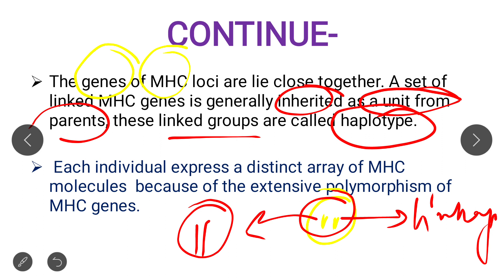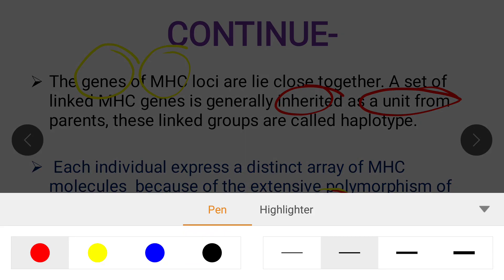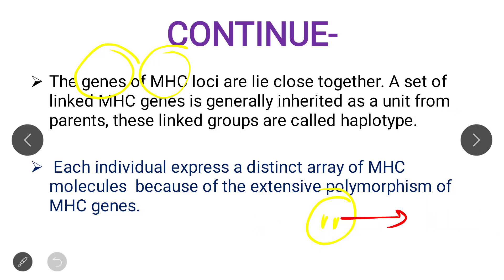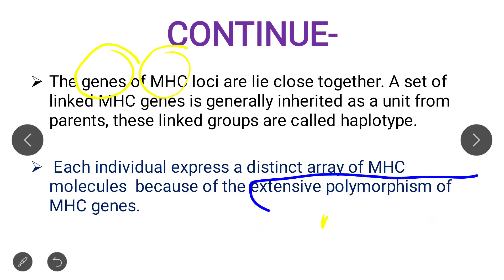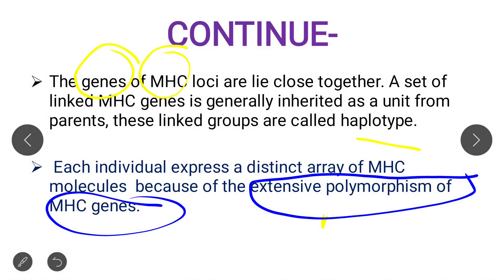Each individual of the same species expresses a distinct array of MHC molecules. Why? Because of the process of genetic polymorphism. Due to genetic polymorphism, each individual expresses a unique, distinct array of MHC molecules.